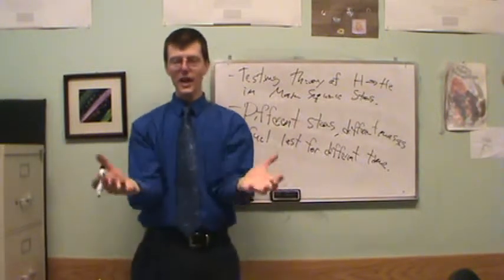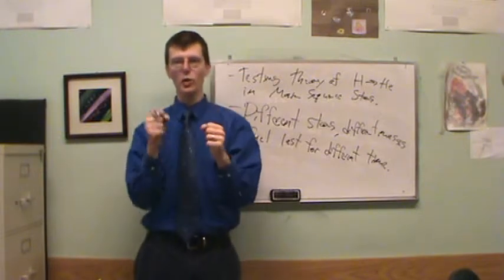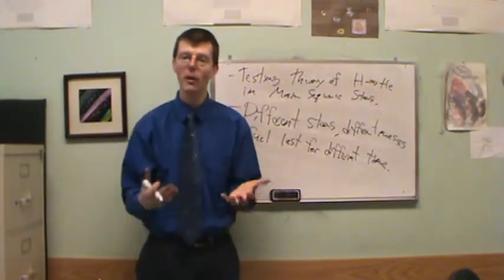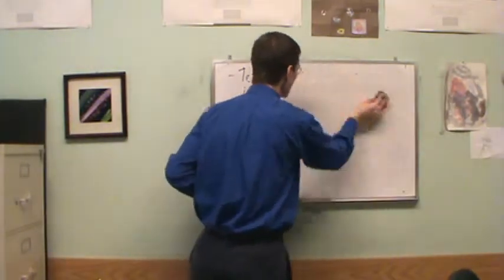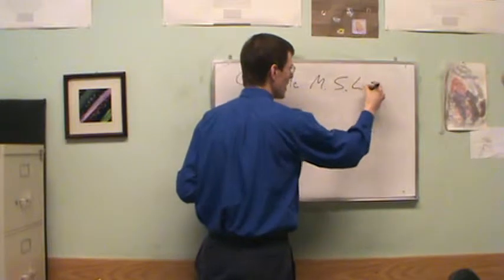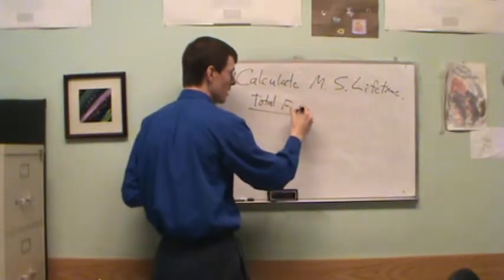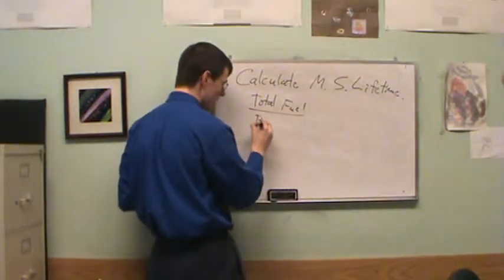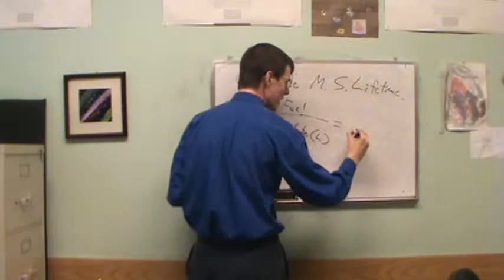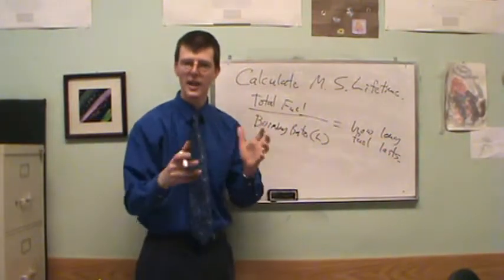So that star with double the mass of the Sun will run out of fuel much faster. We can calculate how long it would take: we know the luminosity, we know how much energy comes from each fusion reaction turning hydrogen to helium, so we can figure out how long a star can last before it runs out of fuel. This is what we call calculating the main sequence lifetime.